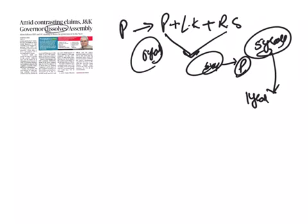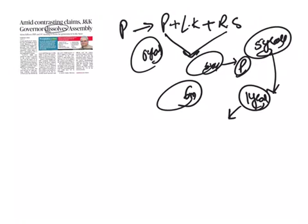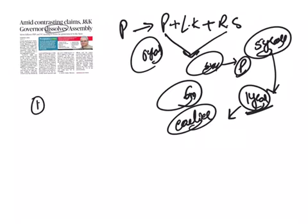Lok Sabha's term can be extended by one year at a time during a national emergency by making a law, but this extension shouldn't continue beyond six months after the emergency has stopped. Lok Sabha can be dissolved earlier — before ending its term. Dissolution ends the life of the existing house and a new house is constituted after general elections. There are two ways: automatic dissolution on the expiry of five years, or dissolution by the President.